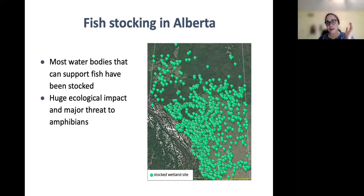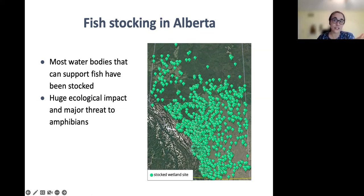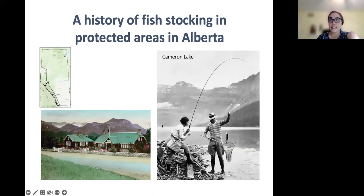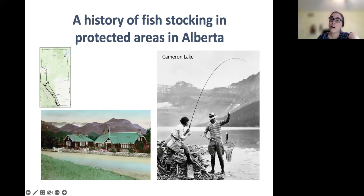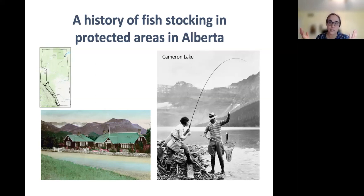This is a map that one of my graduate students put together showing all publicly available data on historically stocked water bodies in the province, giving you a sense of just how extensive this fish stocking has been and continues to be in Alberta. Notably, there was a history of fish stocking in protected areas in the province as well, including our Rocky Mountain national parks, which harbor a large proportion of the long-toed salamanders. Here are a few historic photos — a fish hatchery that was in Waterton, and one of the high elevation lakes where non-native fish were introduced in the 1920s. Fish stocking has since ceased in the national parks, but these introduced populations of fish persist and are still causing ecological problems, including for native fish.